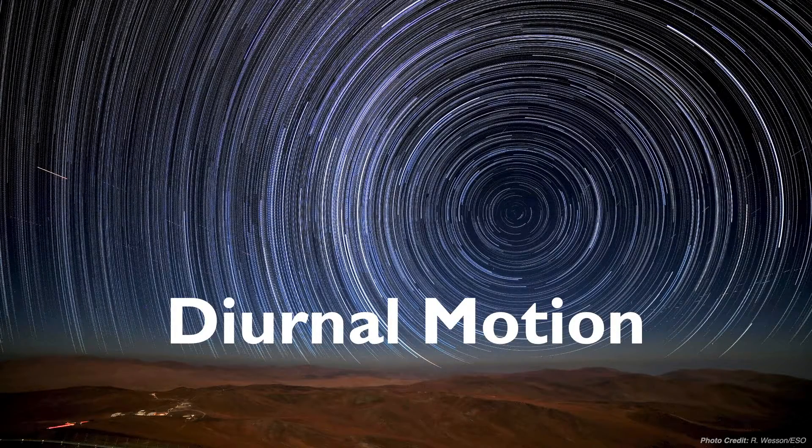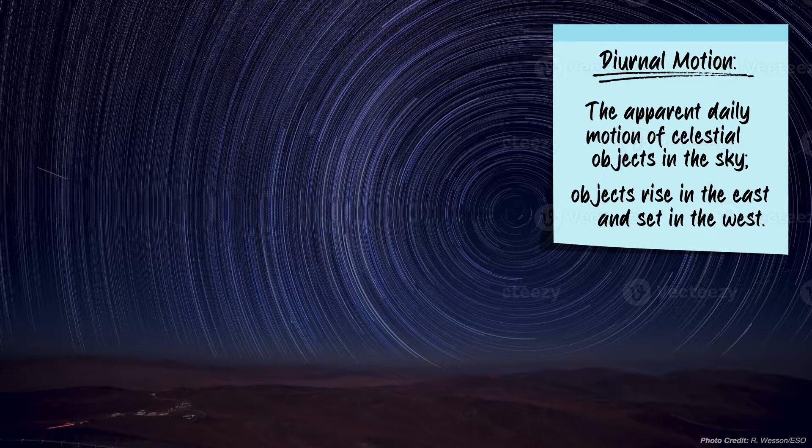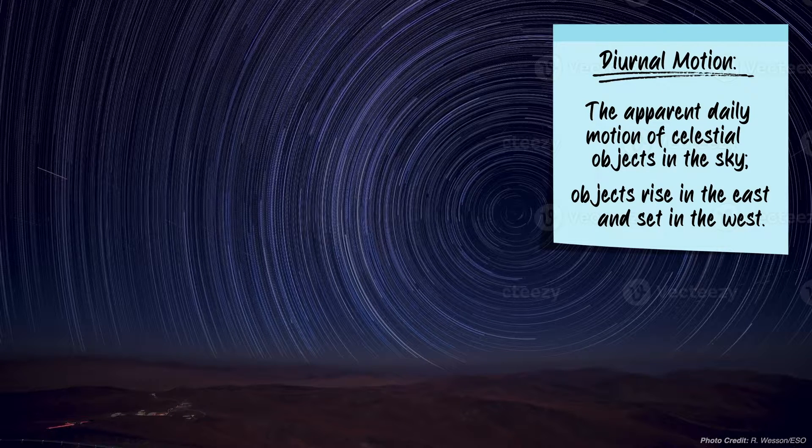First up is a detailed look into the topic of diurnal motion. As a reminder, we are given the definition which states that diurnal motion is the apparent daily motion of celestial objects in the sky.